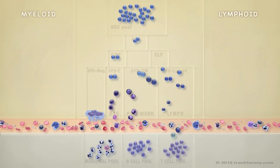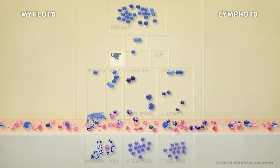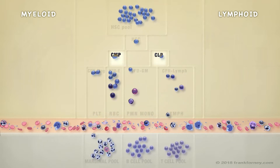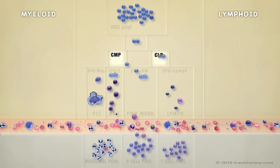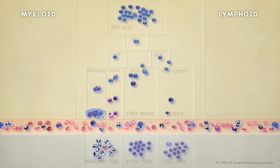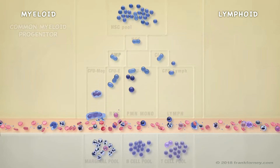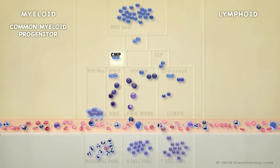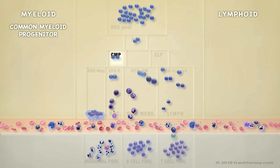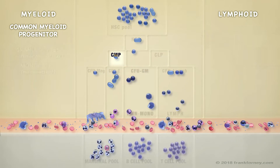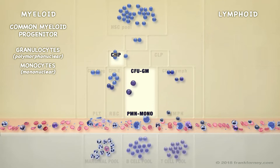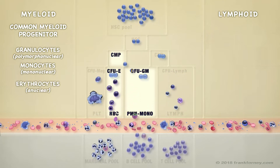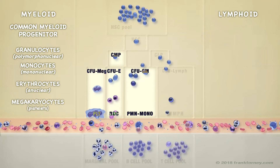The hematopoietic stem cell differentiates into the common myeloid and the common lymphoid progenitor cells. The common myeloid progenitor proliferates to become all cells of the myeloid lineage: granulocytes and monocytes, erythrocytes, and megakaryocytes.